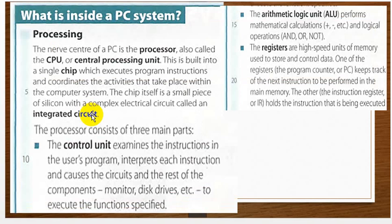Here is the reading section. What is inside a PC? I will read the reading section very carefully — please listen very carefully and look at the pronunciation. If you have any difficulty, listen again and again and you can practice by yourself. Processing: the nerve center of a PC is a processor, also called the CPU or central processing unit. This is built into a single chip which executes program instructions and coordinates the activities that take place within the computer system.